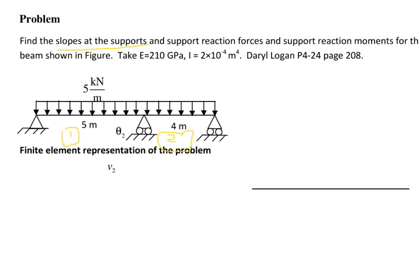This problem is based on the analysis of a beam using FEM. You need to find the slope at the supports, support reactions, and support reaction moments for the beam. Some values are given like E and I. The beam has a UDL load of 5 kilonewton per meter and 3 supports: one rigid support and two roller supports.